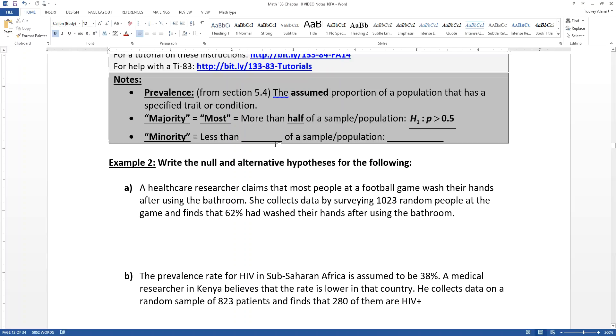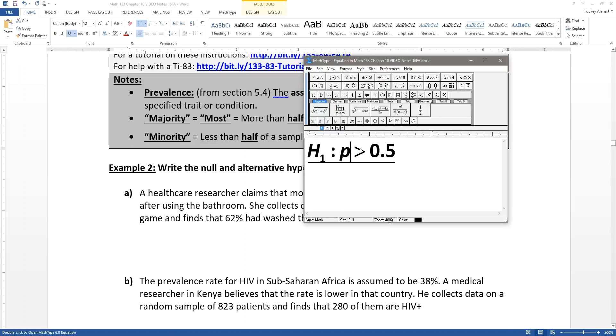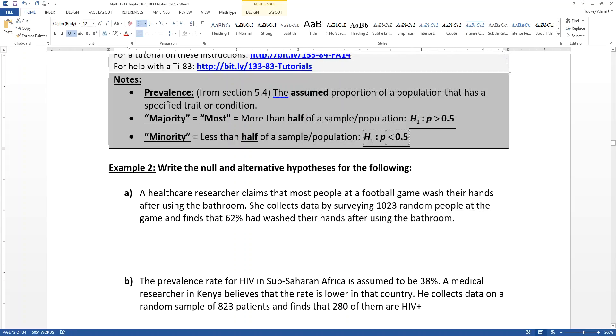Minority means less than half. So a minority of senators are from the Democratic Party, for example. That would mean that it's less than half. So it's giving you your alternative hypothesis of P is less than 0.5. In proportion problems in particular, sometimes the alternative hypothesis is cued in by these words rather than by writing out actual numbers.